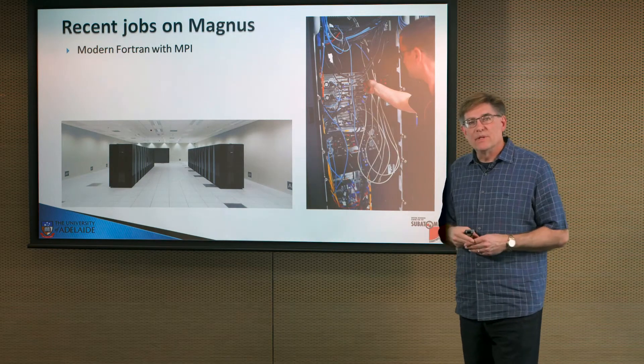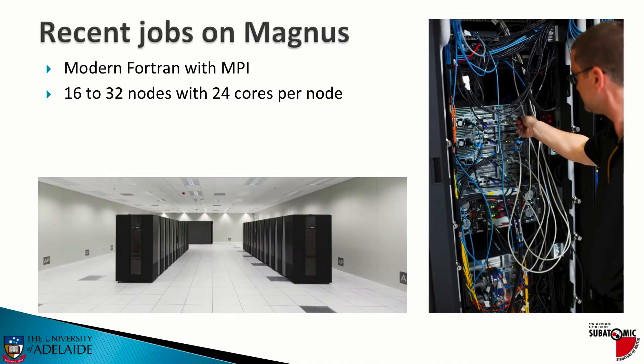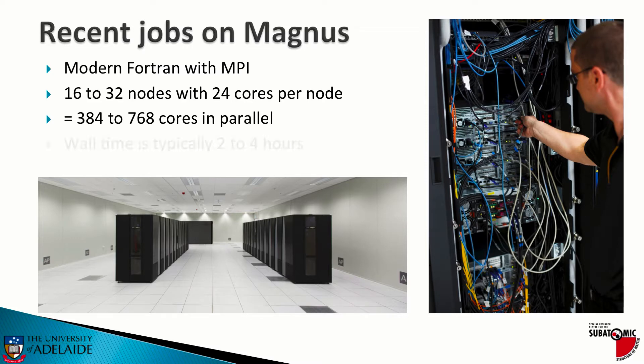How big are the jobs we run on Magnus? We're running modern Fortran code using MPI, the message passing interface. We typically work with somewhere between 16 and 32 nodes, with 24 cores per node — so we're looking at 384 to 768 cores running in parallel. That's actually pretty small these days; we could run larger but we don't need to. By keeping it somewhat small, we can fit into the nooks and crannies of the machine and get extra time, which is so important. Our wall time is typically two to four hours, a comfortable point at which we can checkpoint.